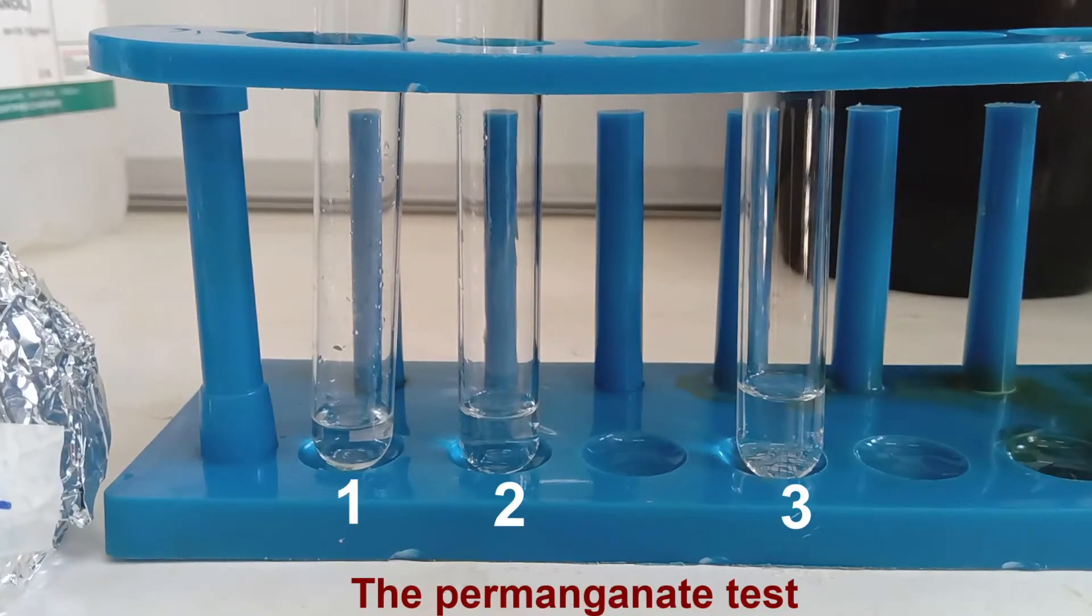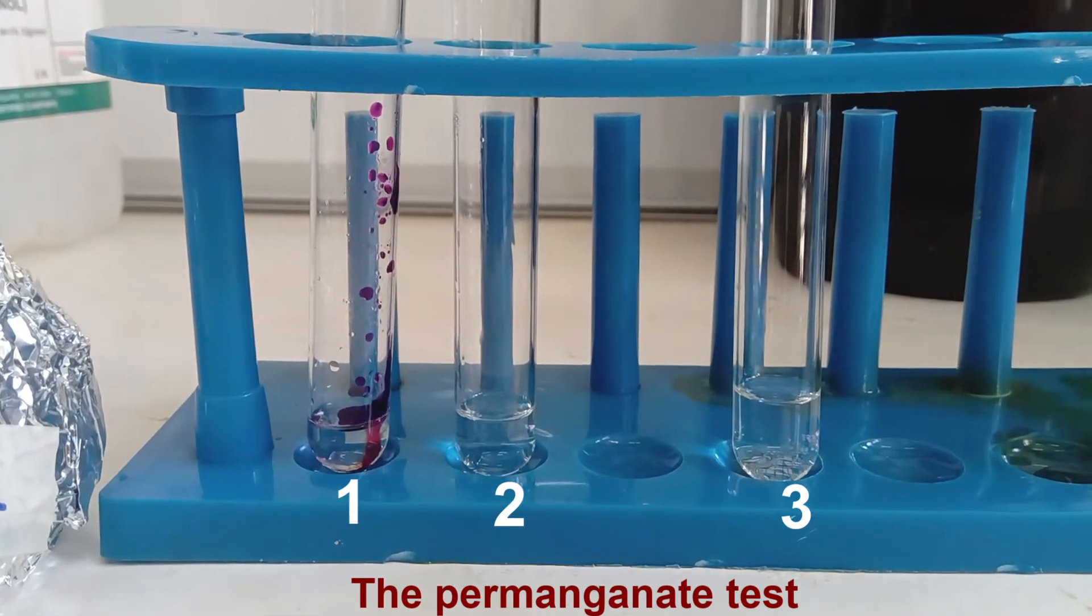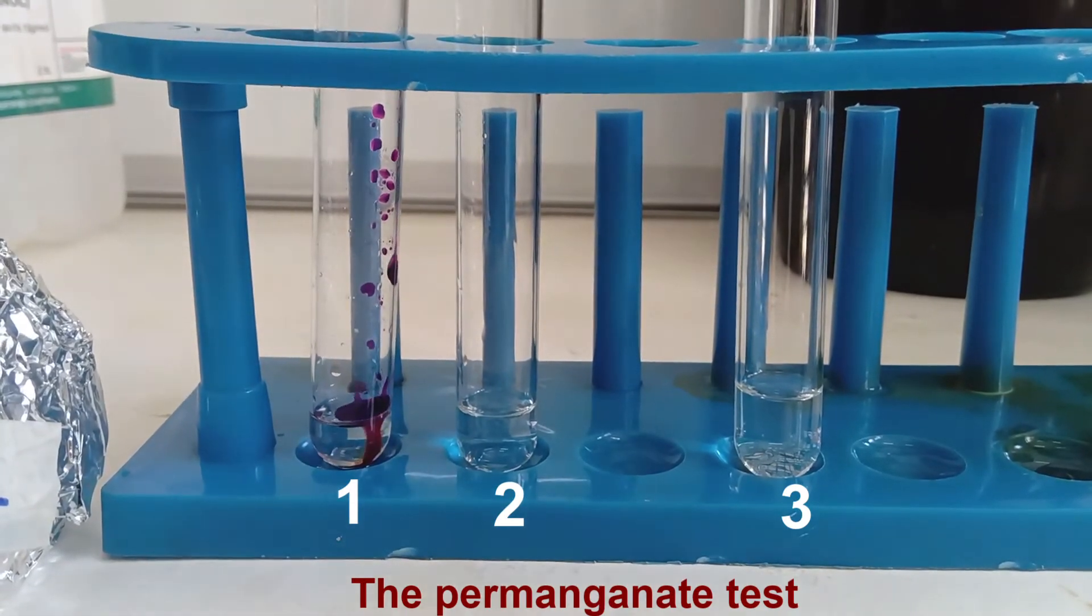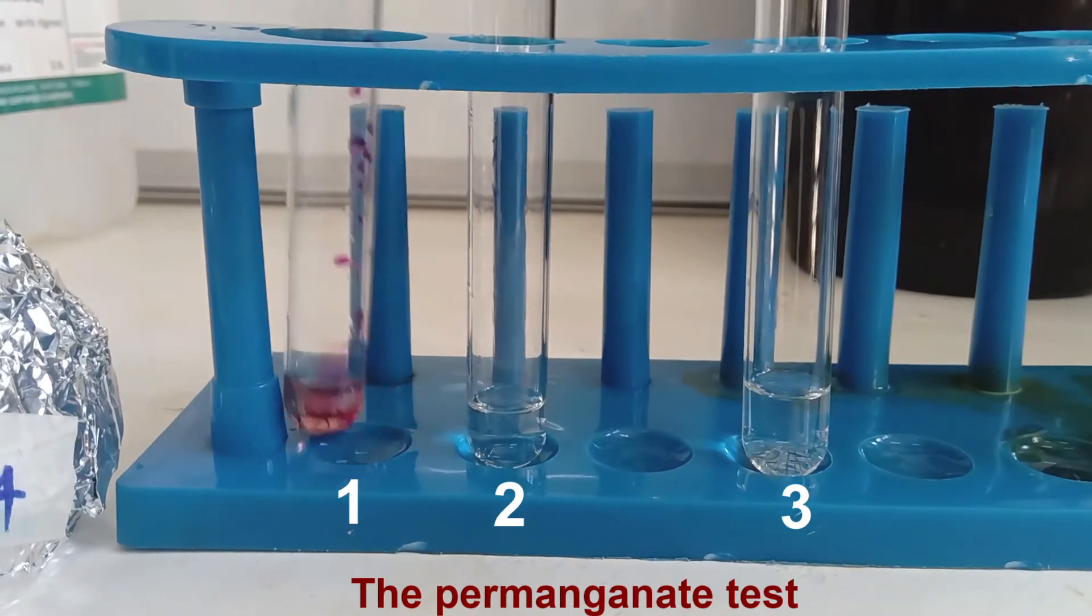In the potassium permanganate test, add one drop of the permanganate solution to a primary, secondary, and tertiary alcohol in test tubes 1, 2, and 3, respectively.